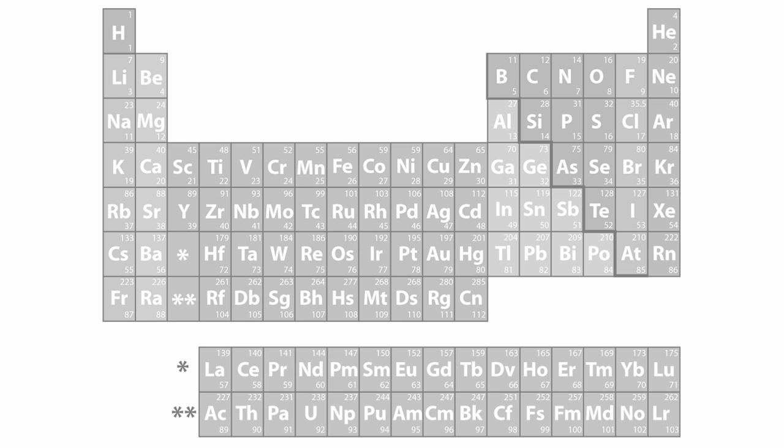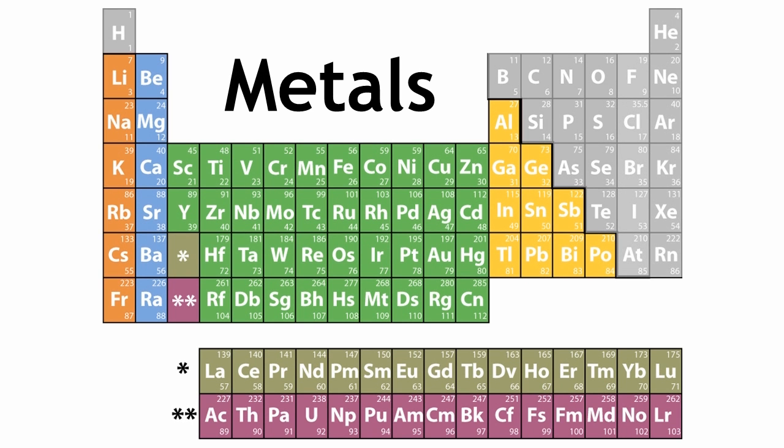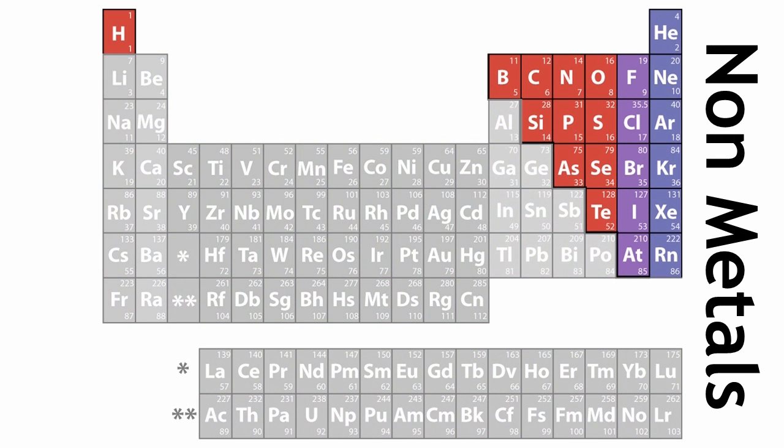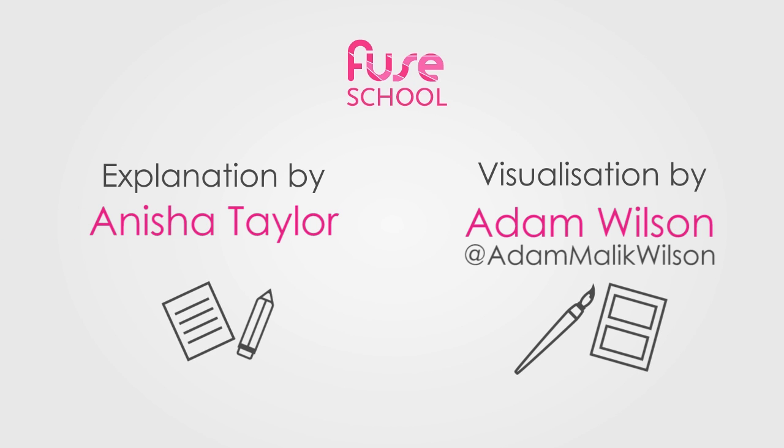In the most basic form, the periodic table can be split into metals and non-metals, with the metals dominating most of the left-hand side of the table, and the non-metals on the right. There are subcategories within these, which we will learn about throughout the course.